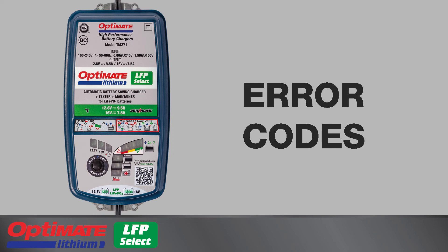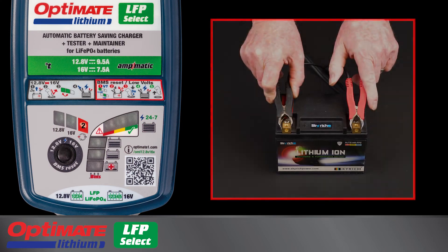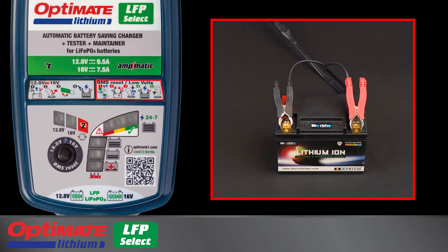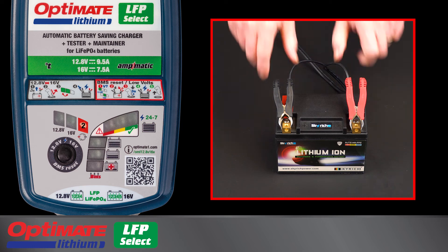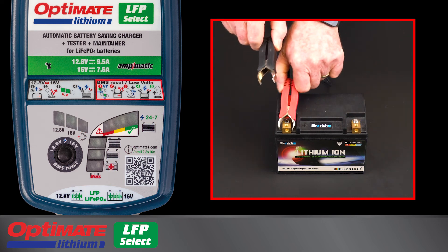The OptiMate Lithium Select carries four different error codes. Lamp 2 lights if a battery with voltage of 0.5 or higher is connected in reverse polarity. Correct the connection before charging the battery.